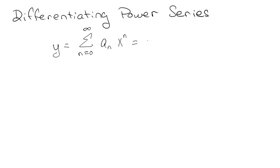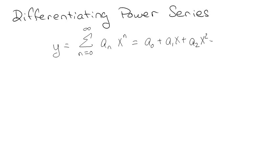So that would just mean we'd have a-naught times x to the 0, which is 1, plus a1 times x to the 1st, plus a2 times x squared, plus a3 times x cubed, et cetera.